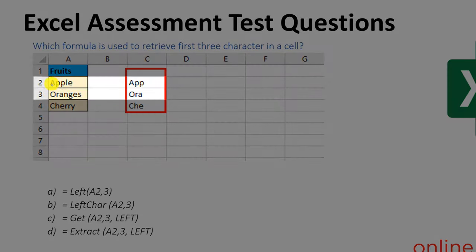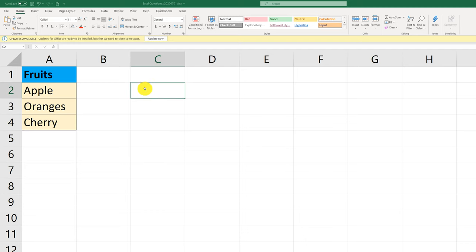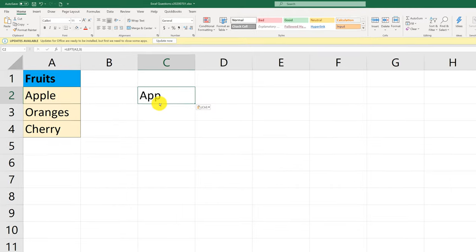For a sample of 'apple,' you see in column C where the values are highlighted, the first three characters would represent APP. For oranges, it would be O-R-A. So what do you think is the right choice here? As you're probably well aware, to get the first three characters on the left side, you would want to use the LEFT formula.